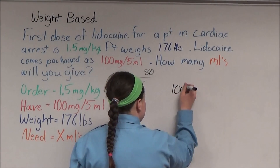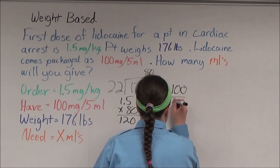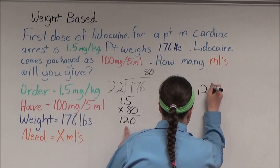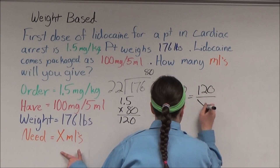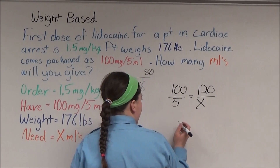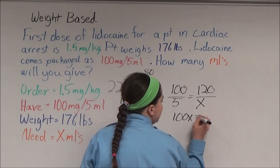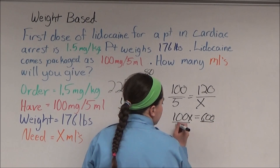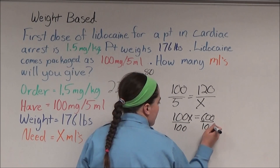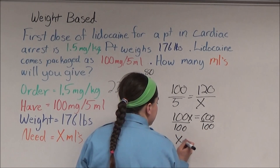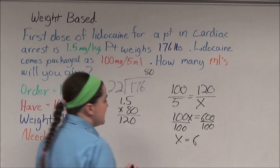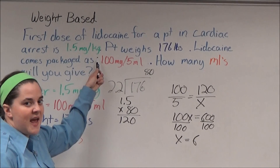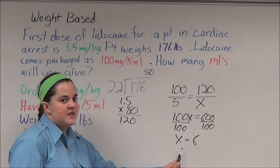100 milligrams over 5 milliliters is equal to 120 milligrams over x. Cross multiply: 100x is equal to 600. Divide both sides of the equation by 100, and x is equal to 6. Which means that in order to give the patient 1.5 milligrams per kilogram of lidocaine, I have to give them 6 milliliters of medication.